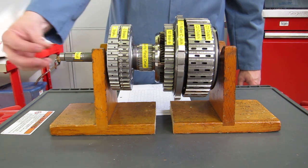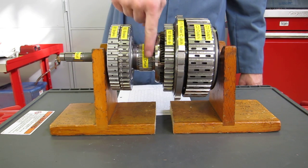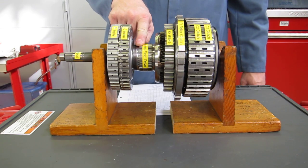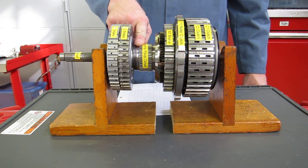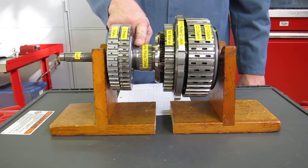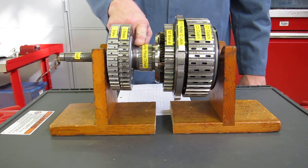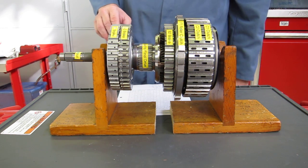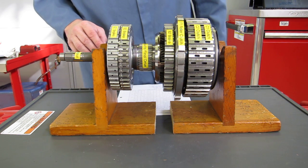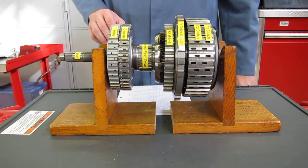So our power comes in from the engine. Anytime this spline shaft right here turns, the vehicle is going to be moving. And so what I want to do is walk you through the six different forward gears and reverse to see how all those are accomplished using the different clutches and roller clutches.